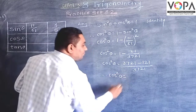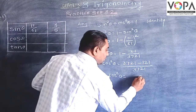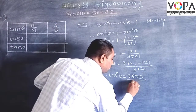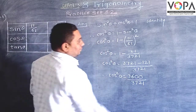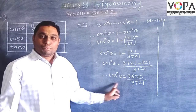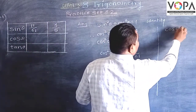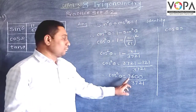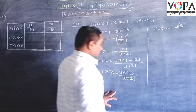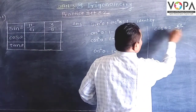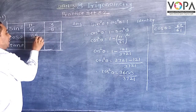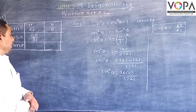Taking the subtraction, cos square theta is equal to 3600 upon 3721. Now, by taking the square root of both sides, cos theta is equal to — we know that the square root of 3600 is 60 and the square root of 3721 is 61. So, the value of cos theta is 60 upon 61.